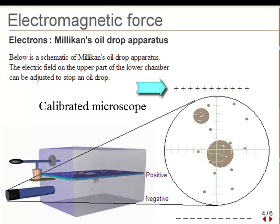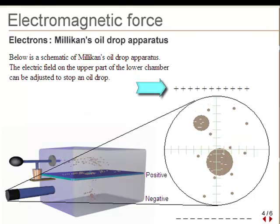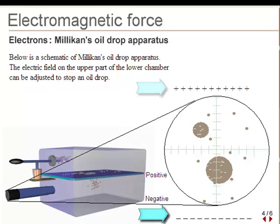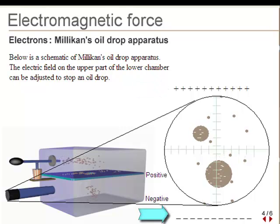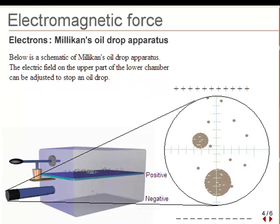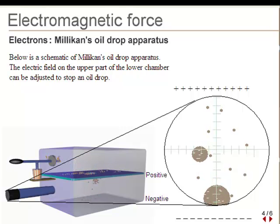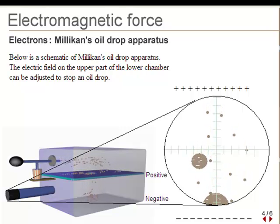By positively charging the upper portion of the lower chamber and negatively charging the lower portion, the oil drop can be made to move up or down, and the electric field strength can be chosen to just stop the drop.